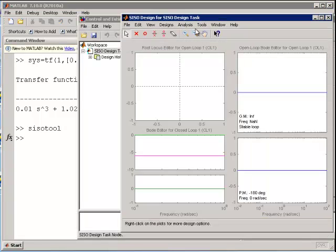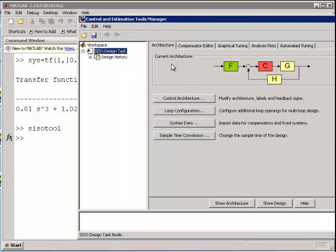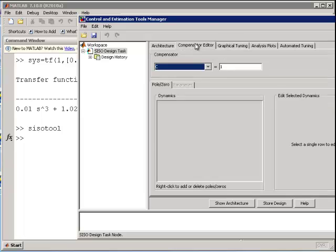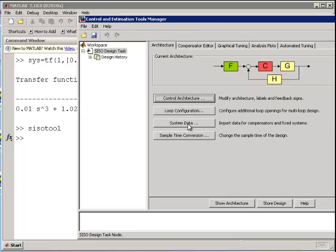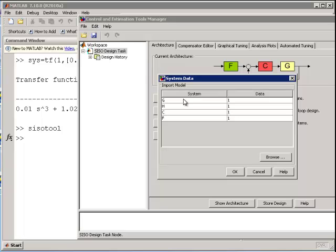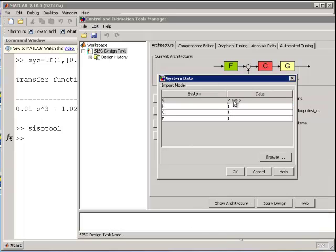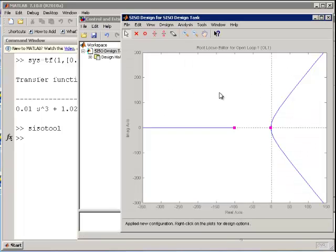Again, I'm going to go and turn off all the things I'm not using. Graphical tuning. We're not looking at the Bode plots. Compensator, editor, architecture, system data, change the plant G to the system I just described. We'll use that system. Import should show up right there. OK.